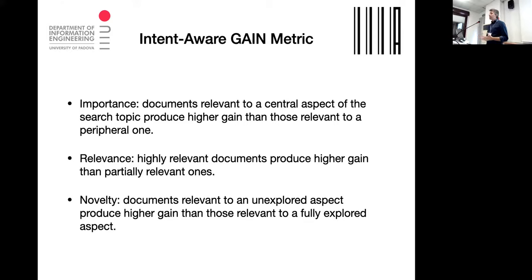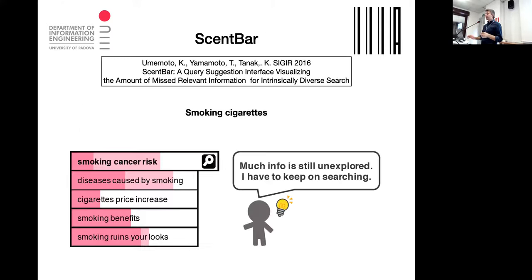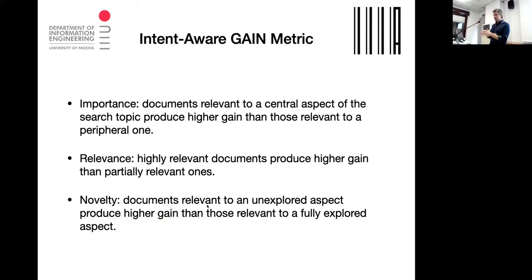These are initial principles used to define this gain metric. A highly relevant document produces higher gain than a partially relevant one. And there's a diversity-like principle: if you've already seen relevant documents about cigarette pricing, a new relevant document about that sub-topic may be more important than yet another relevant document about disease caused by smoking. It's the question of novelty and diversifying results. A relevant document for a peripheral aspect can at some point be more useful than others.